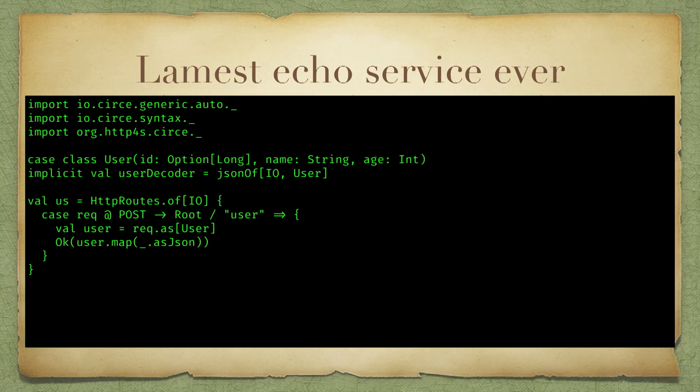I did have to say 'JsonOf' in order to make the encoder visible to HTTP4S. I have a JSON encoder and decoder which knows nothing about HTTP, and then I need JsonOf to say, 'hey HTTP, here's what's called an entity encoder — this can be a body of an HTTP request or response.' That's what that's for.